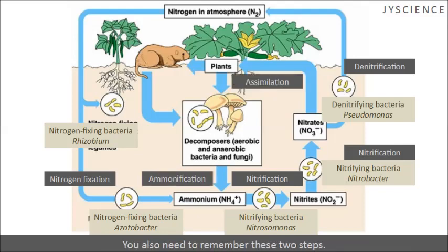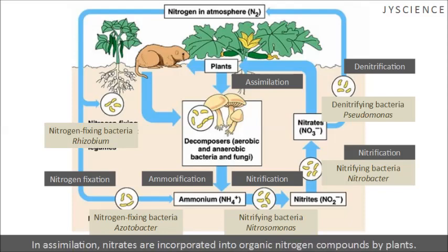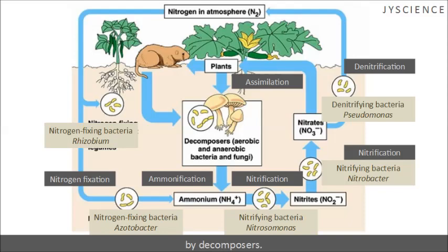You also need to remember these two steps: assimilation and ammonification. In assimilation, nitrates are incorporated into organic nitrogen compounds by plants. In ammonification, organic nitrogen compounds are converted into ammonium by decomposers.